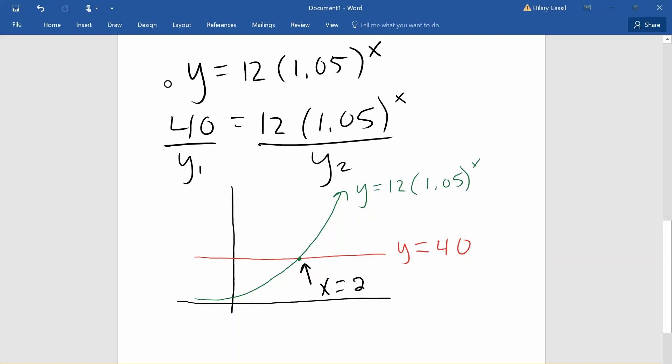At x equals 24.7. So remember, our x values represented years since 2010. So if we add that 24.7 to 2010, a good answer to this might be during the year of 2034.